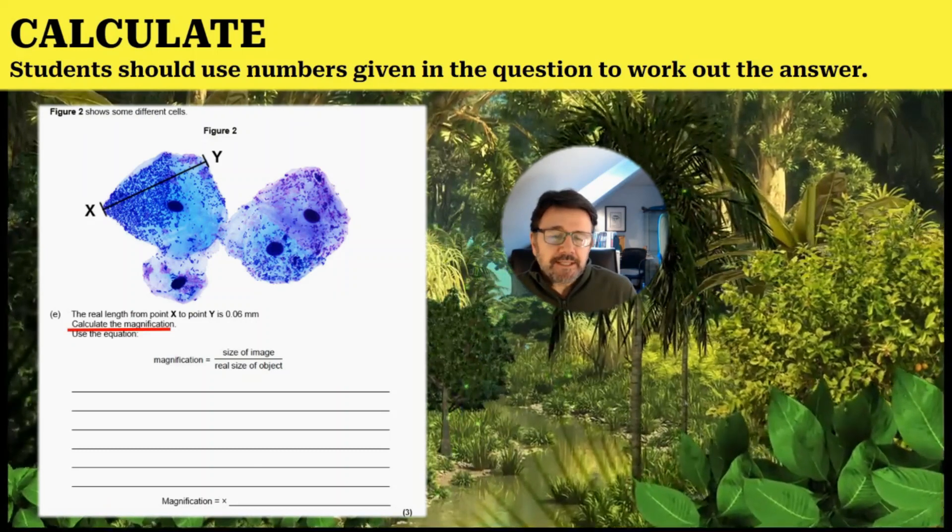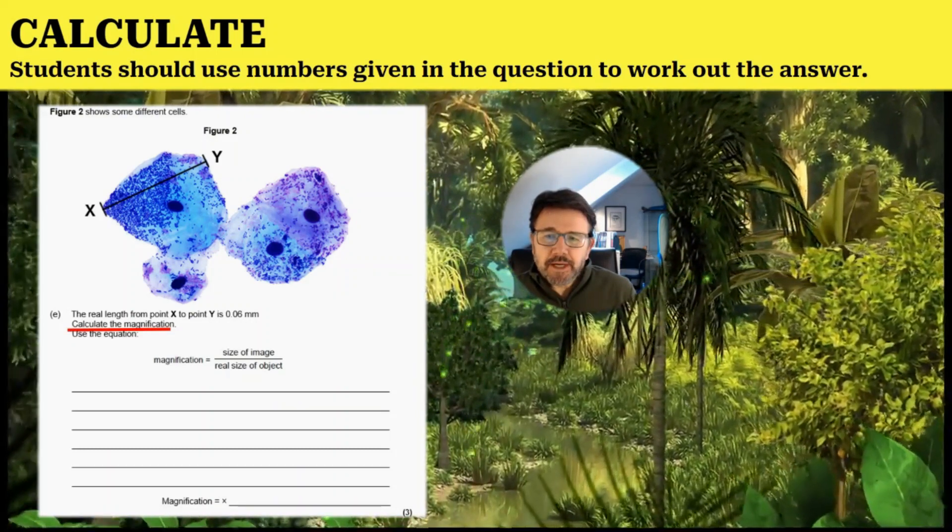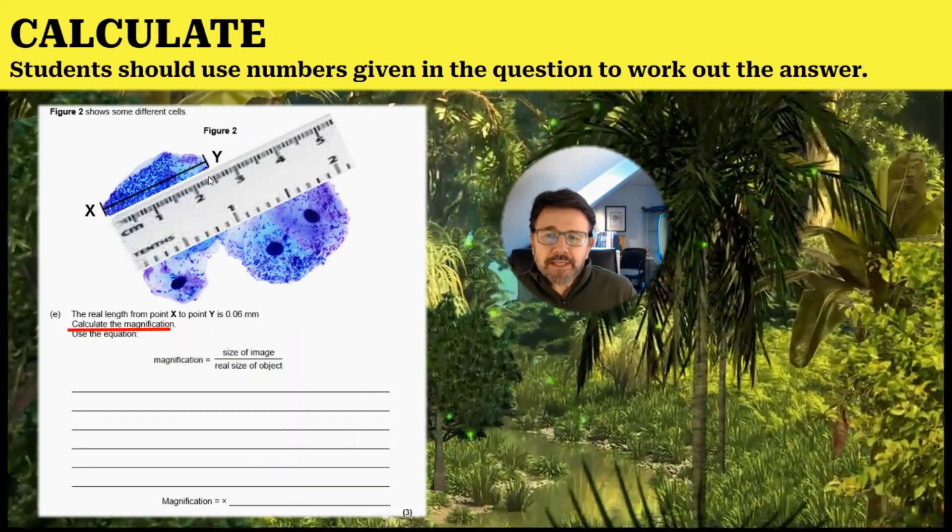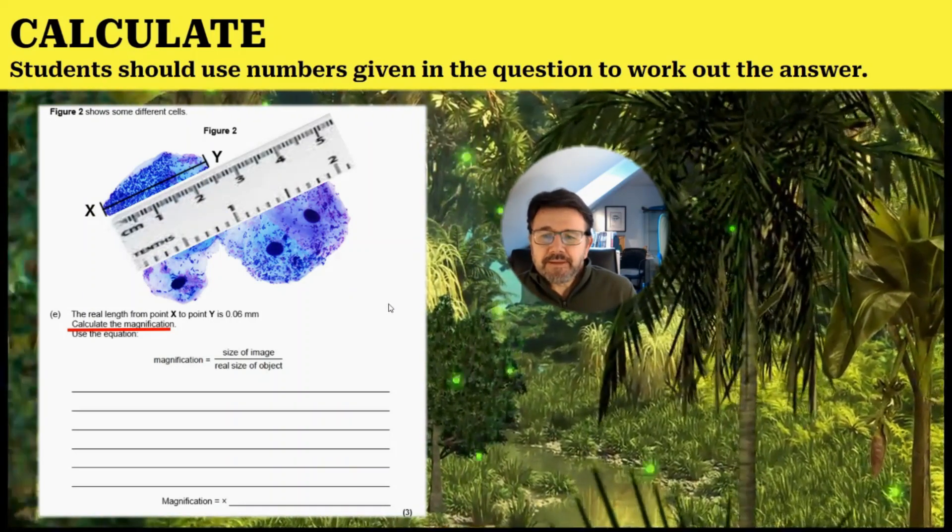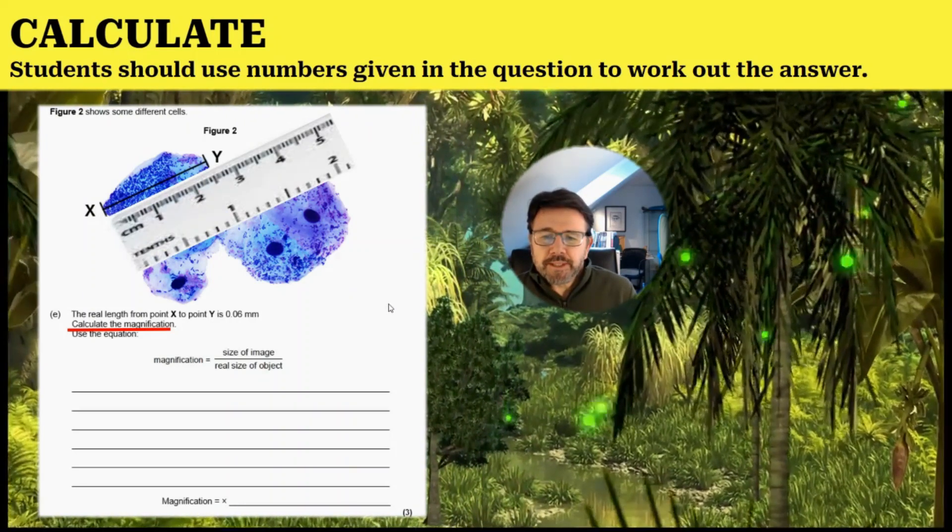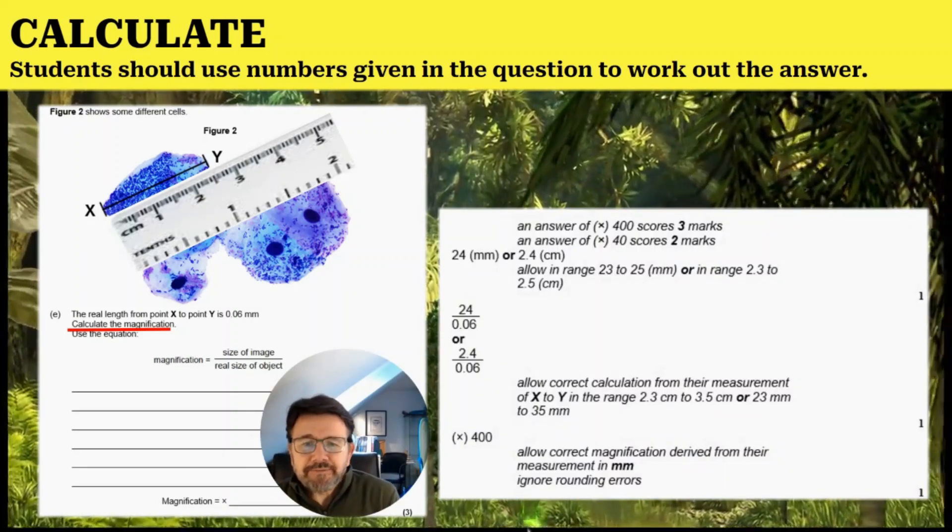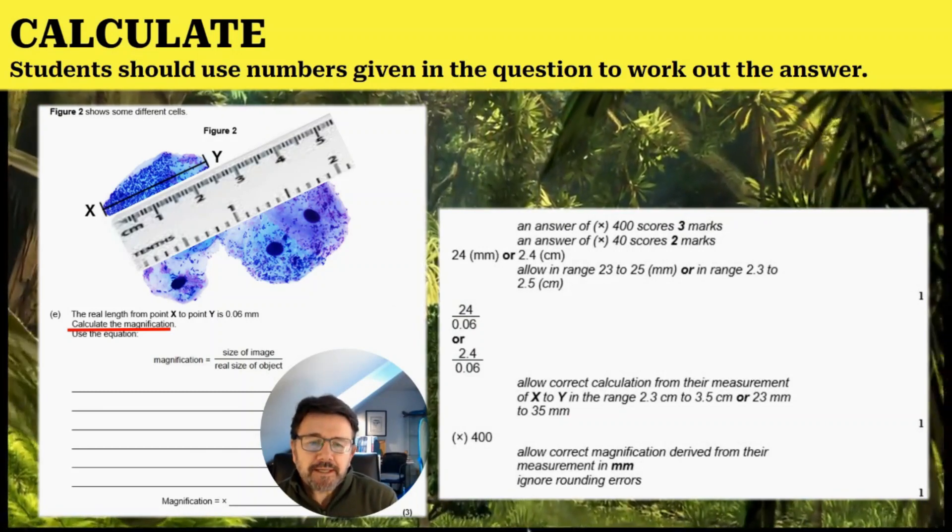You're going to need to measure the size of the image. With your ruler, you're going to measure it in millimeters. So the size of image divided by the real size of the object. As you can see, 24 millimeters divided by 0.06.